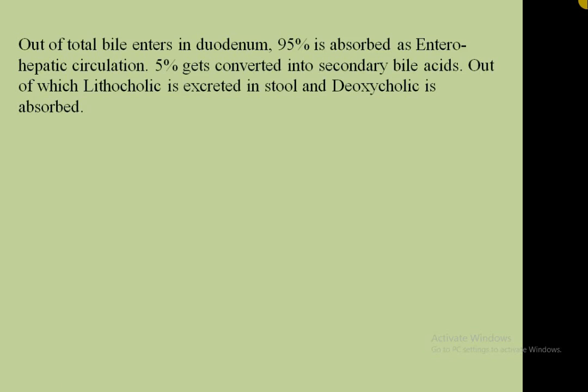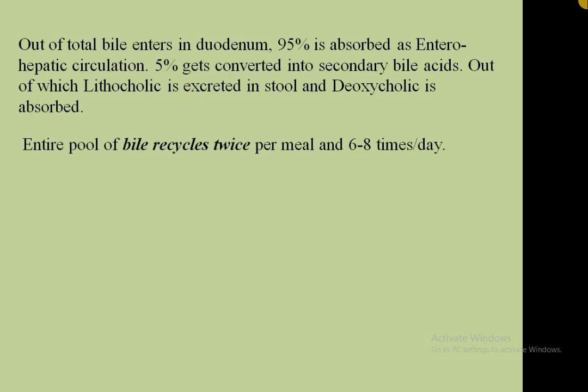Of the total bile entering the duodenum, 95% is taken back by the liver — this is known as enterohepatic circulation. The remaining 5% stays in the duodenum and gets converted into secondary bile acids. Of those, lithocholic acid is excreted in the stool while deoxycholic acid is reabsorbed. The entire bile pool recycles twice per meal, or six to eight times per day.